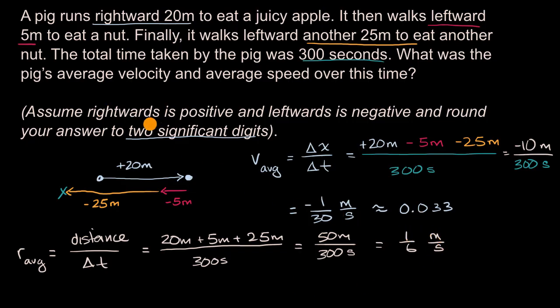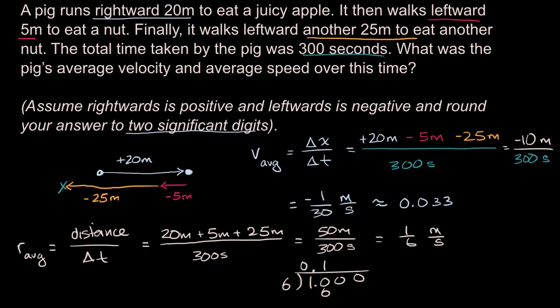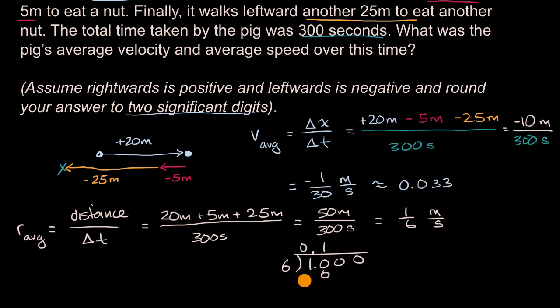And if we want to write it as a decimal, let's see. Six goes into one. Let's put some zeros here. Six goes into 10 one time. One times six is six. I could scroll down a little bit.